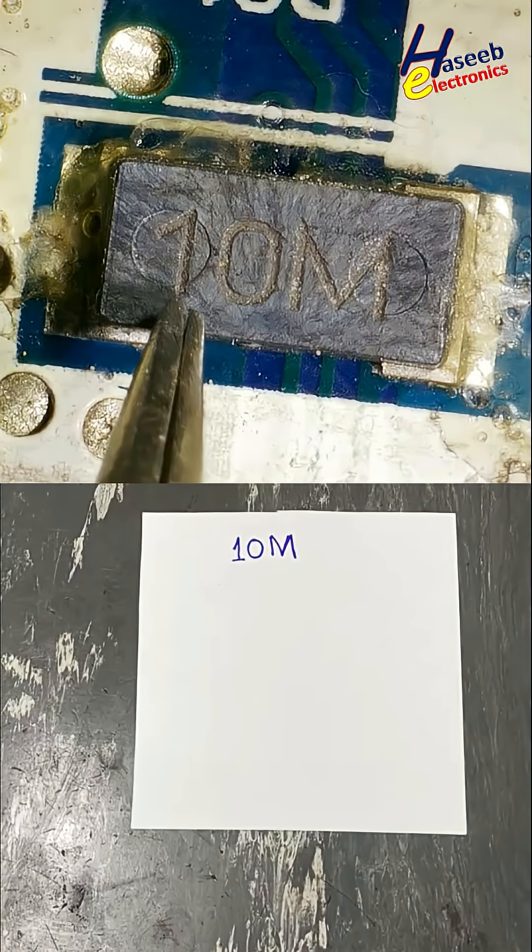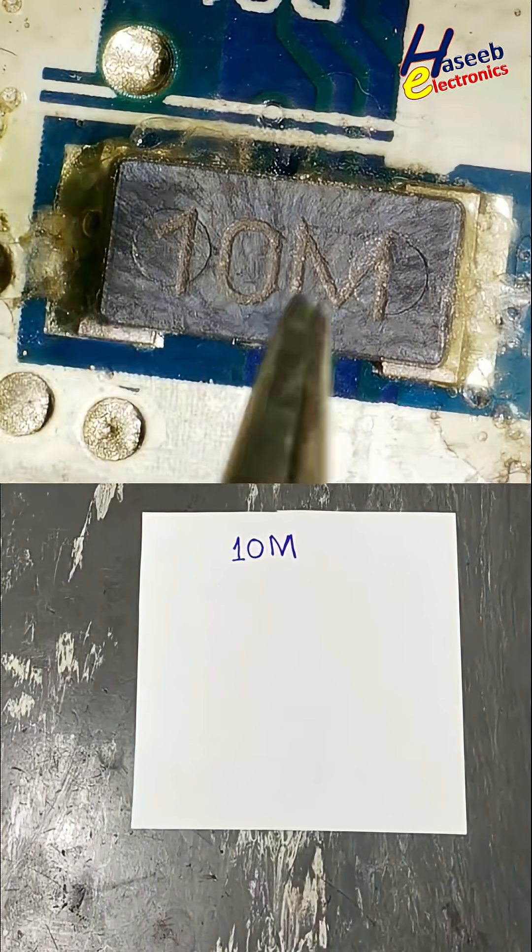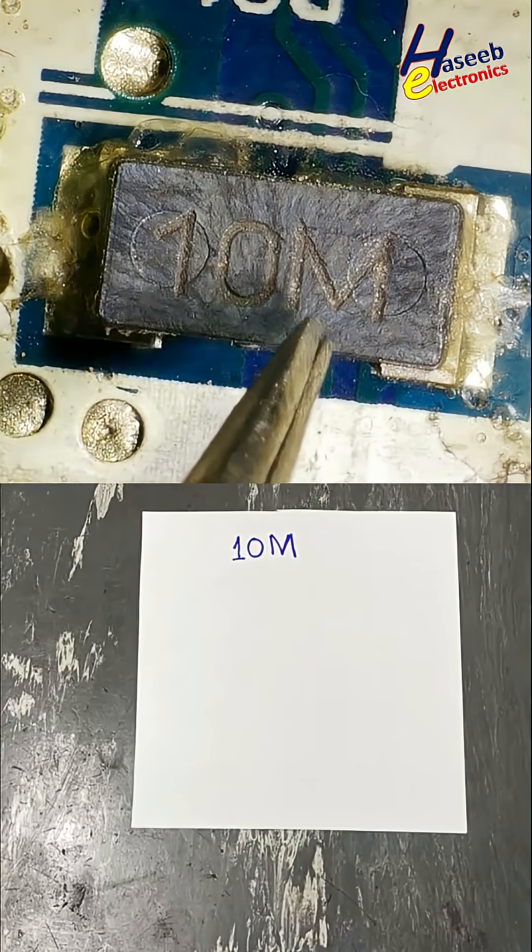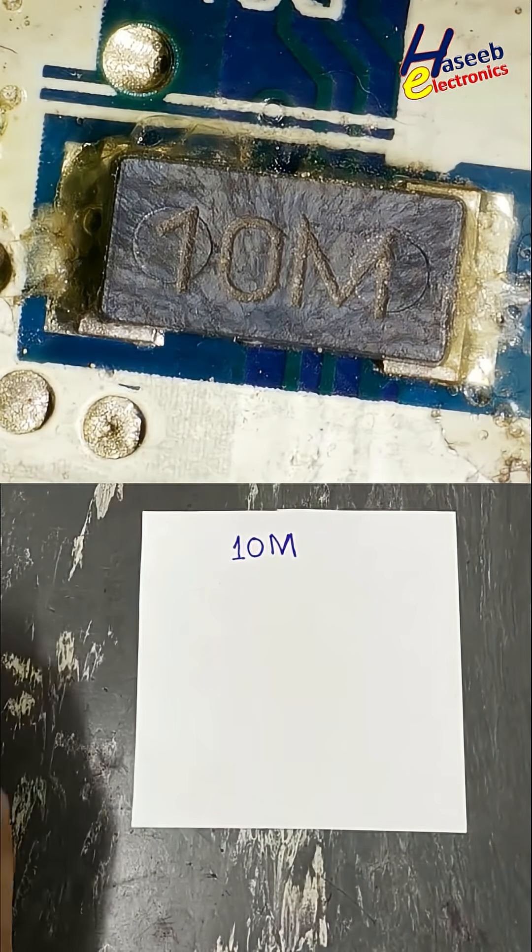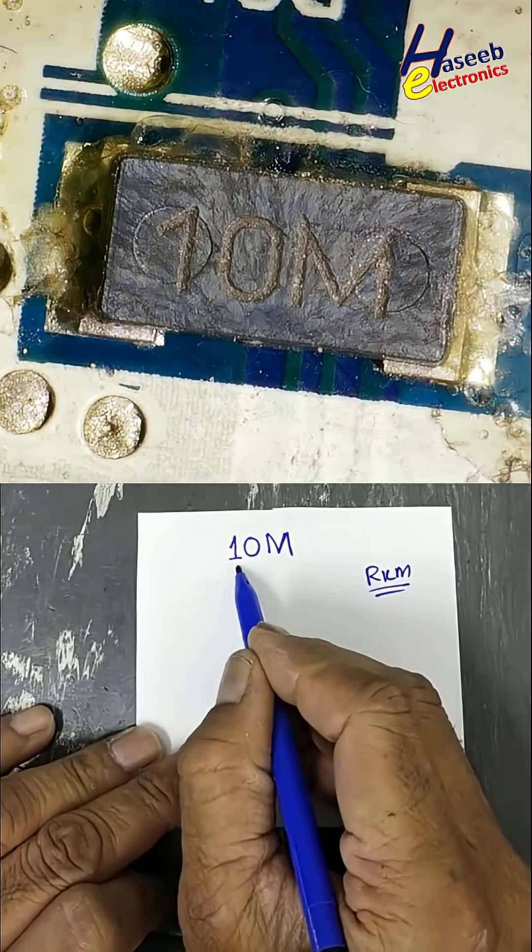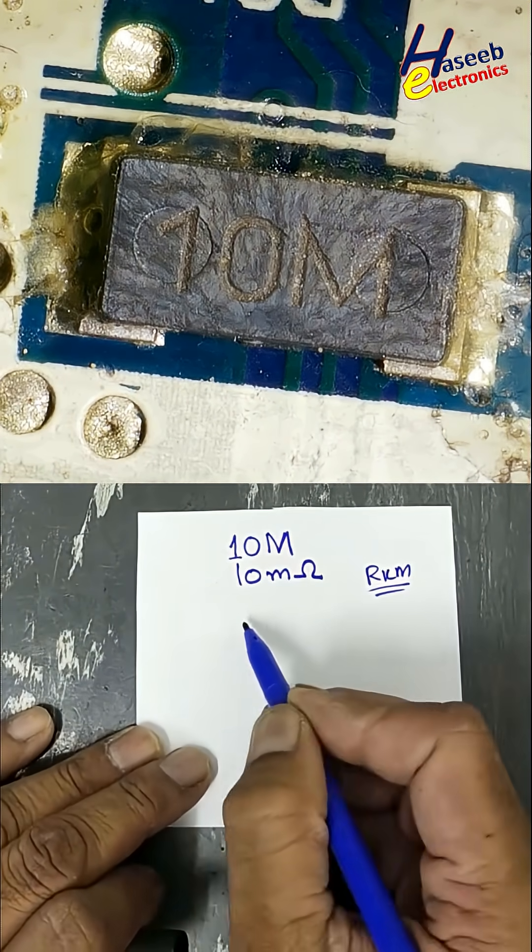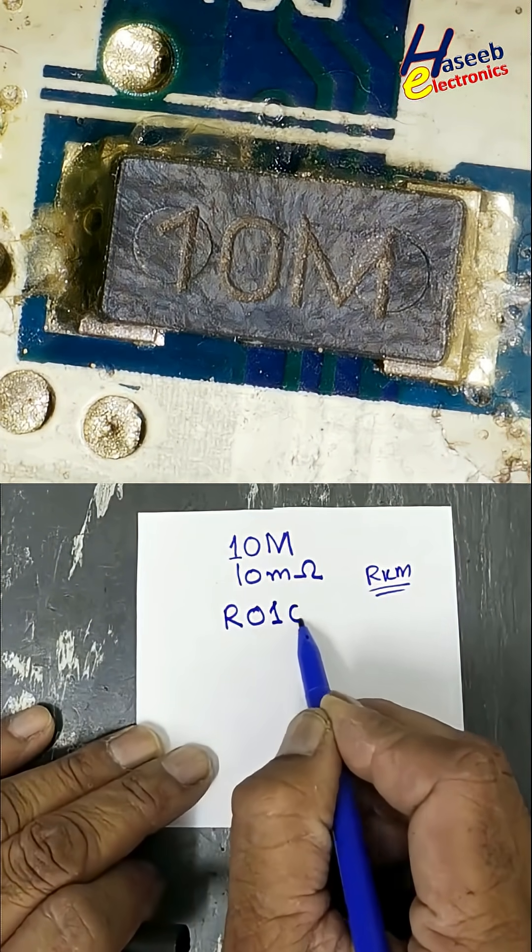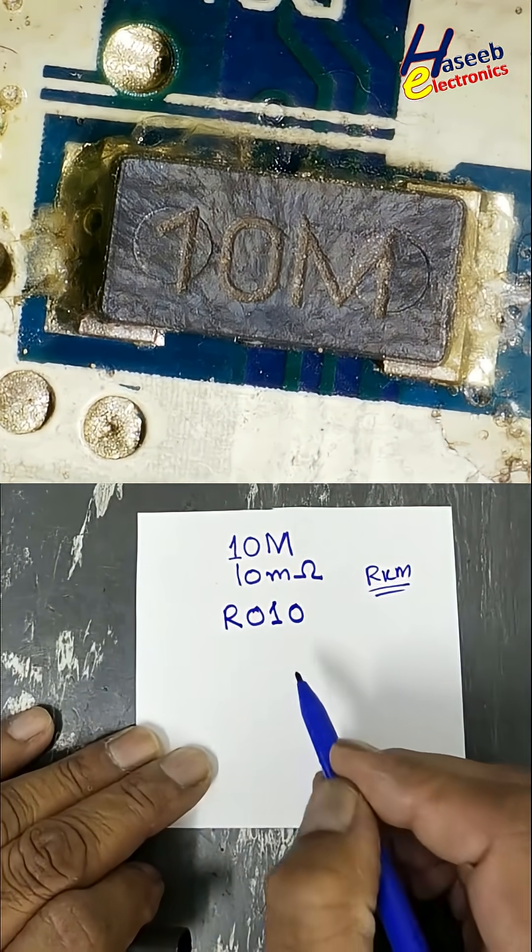SMD chip resistor marking code 10M - this M is not mega, it is the million sign for the decimal point. It's RKM code that means 10 milli-ohm. If we have resistor code R010, that is the same.